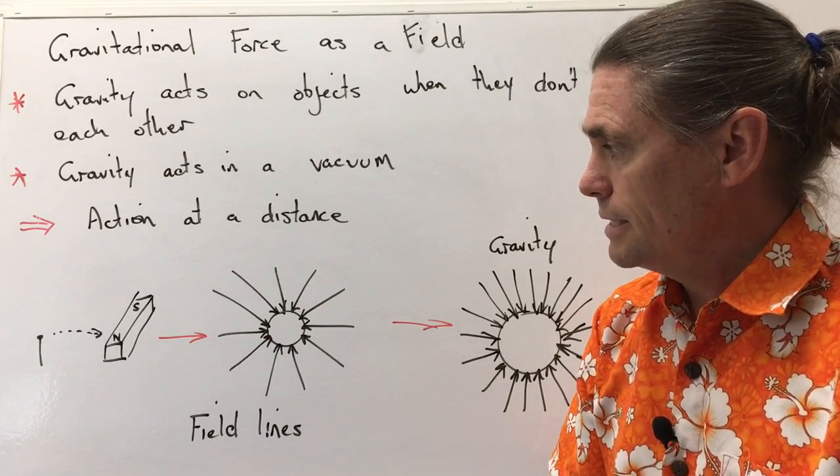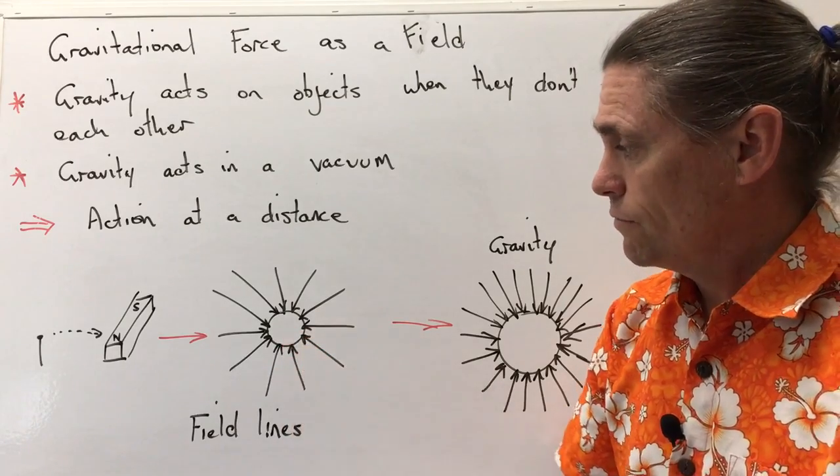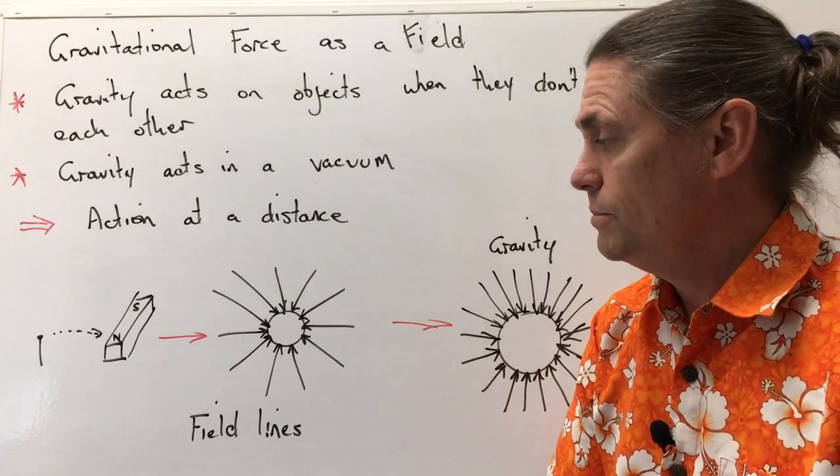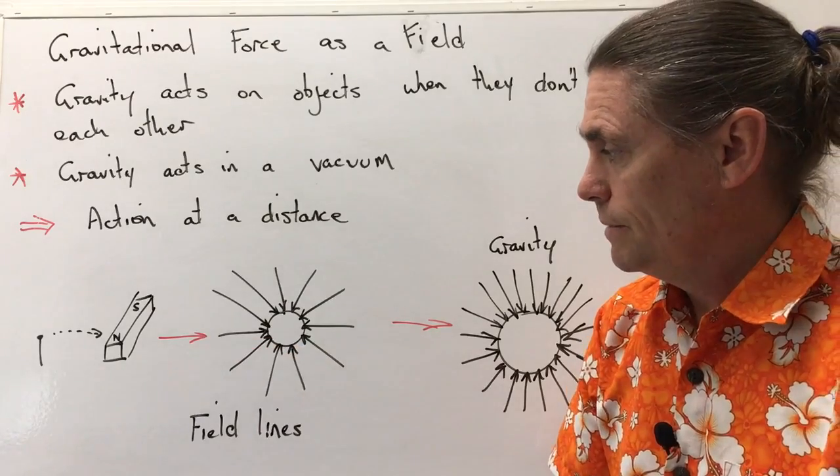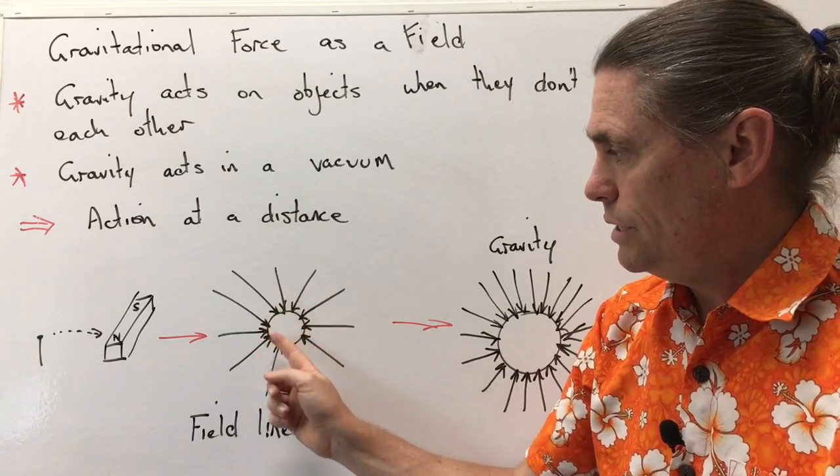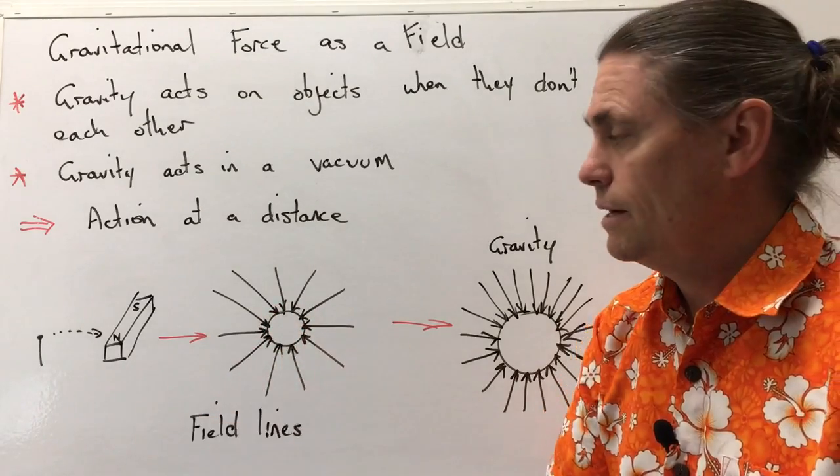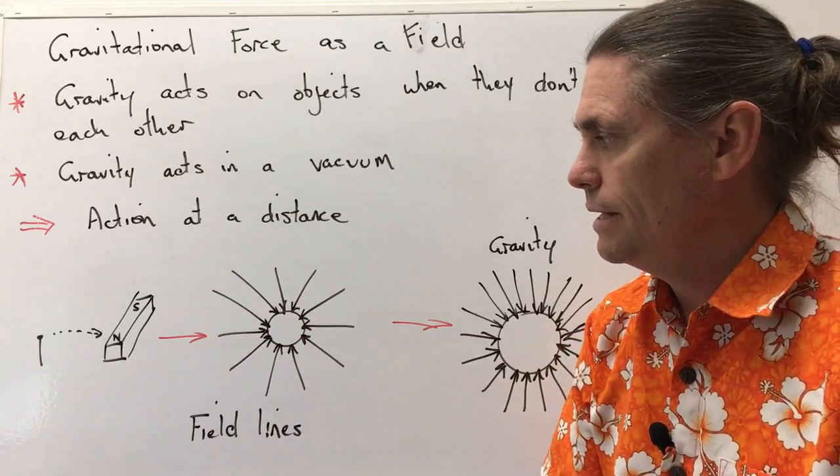And lastly, we can also show at a distance out from the object that's attracting another object, the density as well. So the closer in to the magnet that's attracting our nail, the more dense that field is.